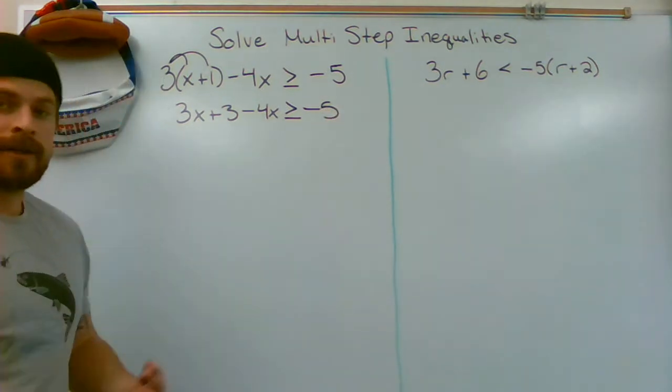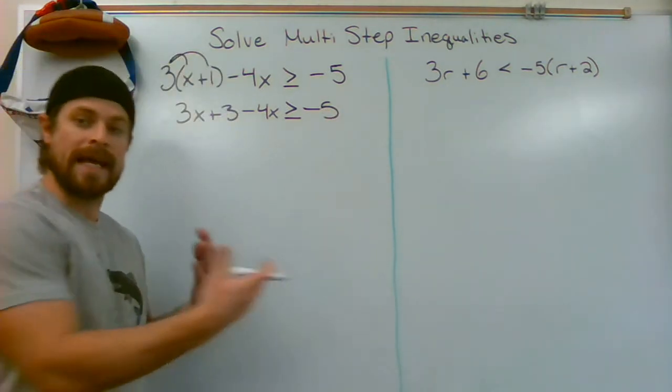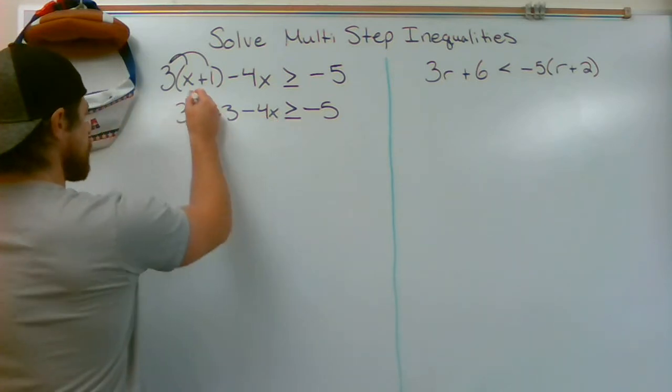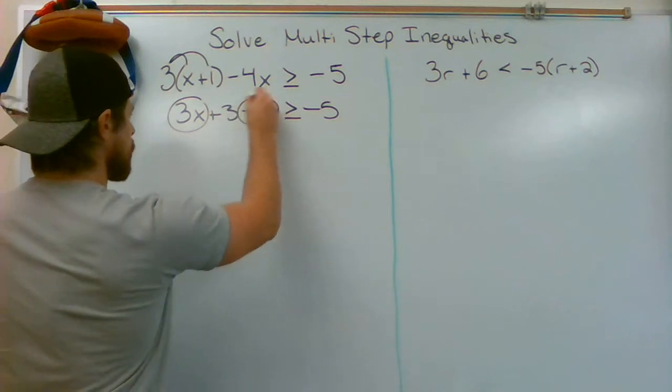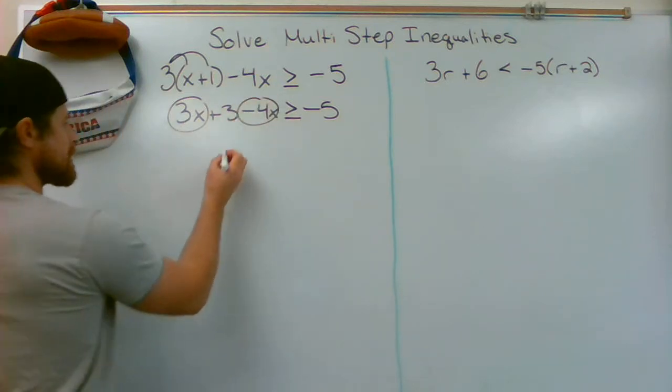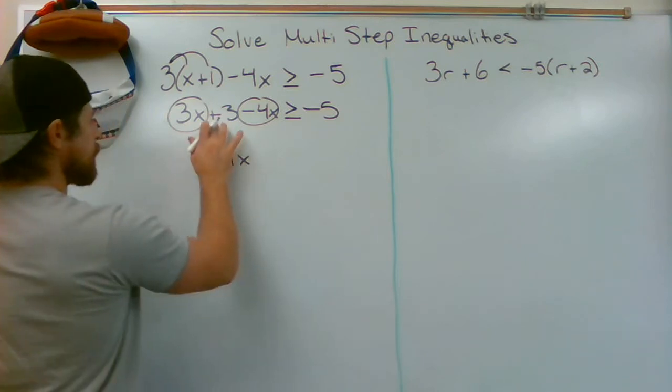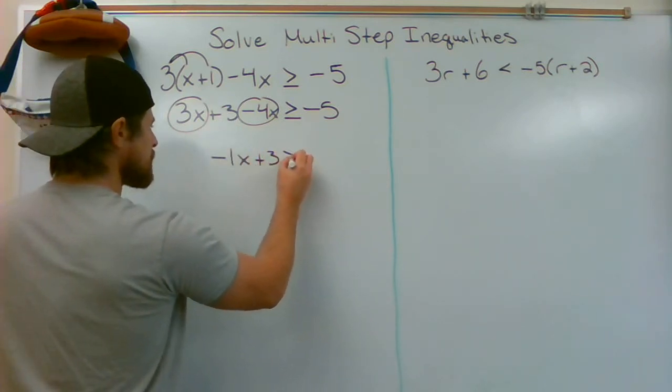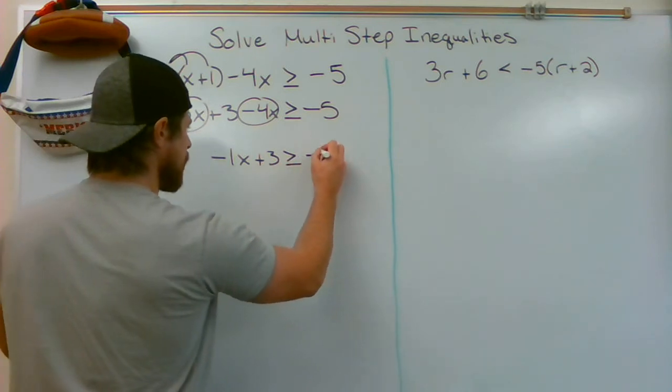I'm still looking at the left side of this inequality, and I realize that there are like terms that need to be combined. So I'm going to combine these like terms. 3x minus 4x is going to give me negative 1x. Plus 3 gets brought down, and this is all greater than or equal to negative 5.